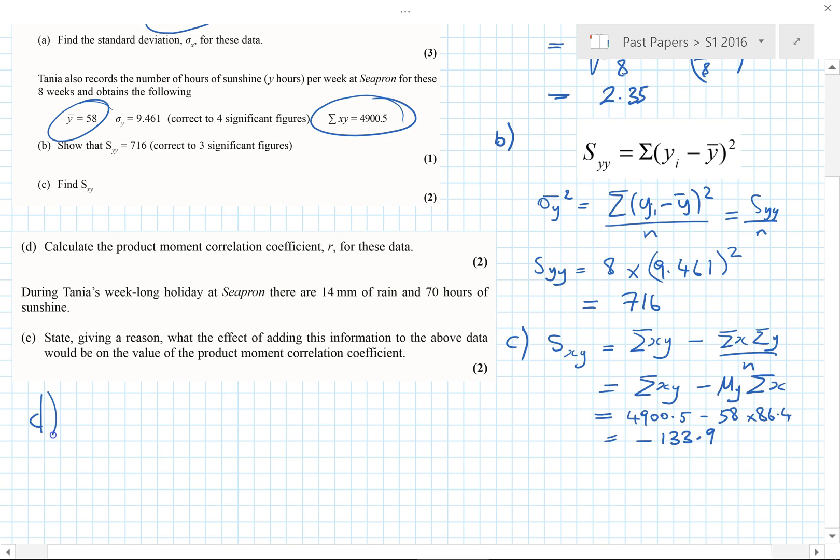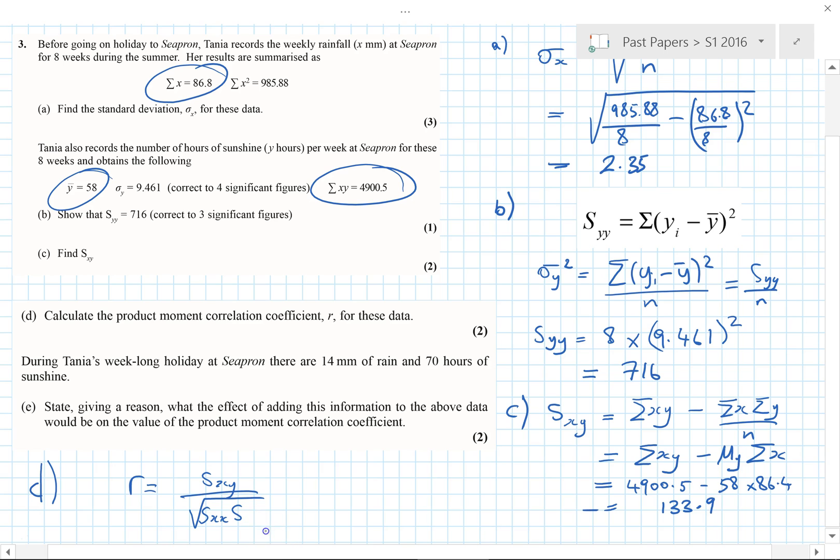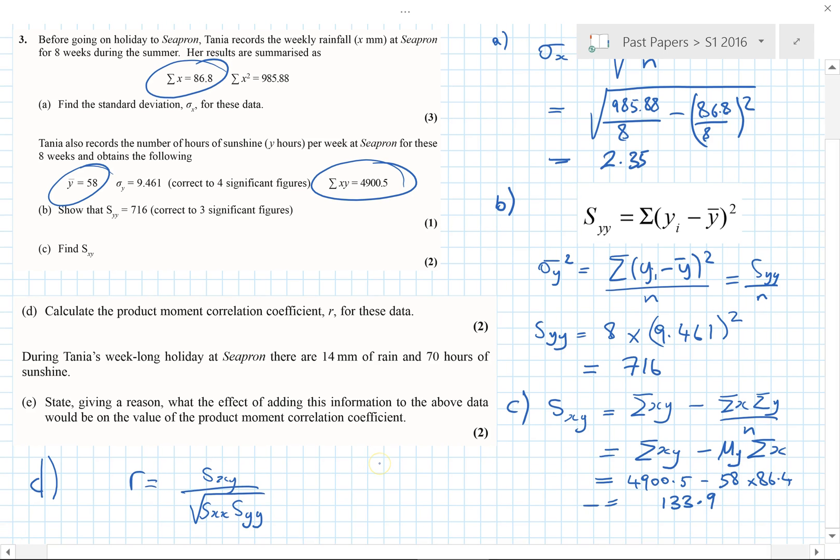Part D. R is equal to SXY divided by the square root of SXX, SYY. And we've got all this data, I think. We've got the results, SYY there. I do have to do a bit more work than I thought, even though there's only two marks. We use a similar argument. We've said that SYY is equal to N times sigma Y squared. So we can also say SXX is equal to N times sigma X squared. And we've got that information there: 8 times 2.35 squared.